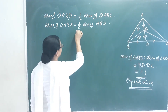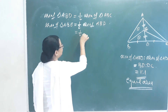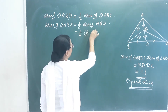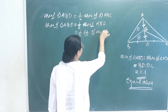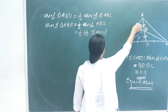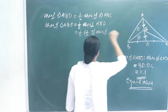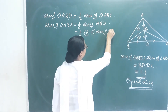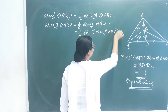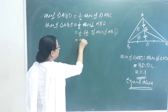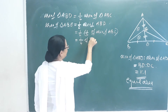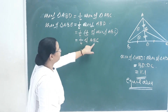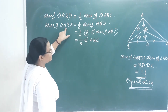Therefore, area of triangle ABE is equal to one half into one half of area of ABC, which equals one fourth of area of triangle ABC.